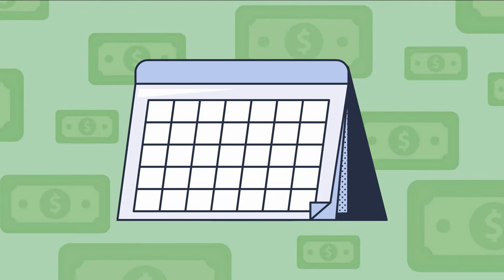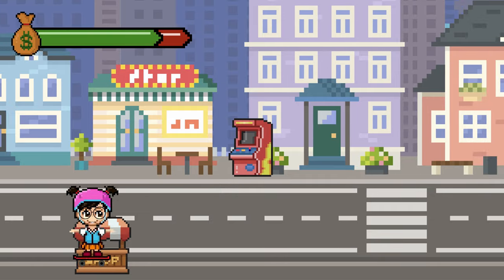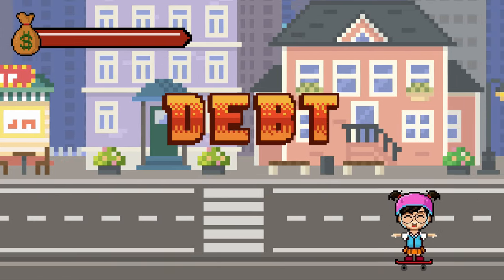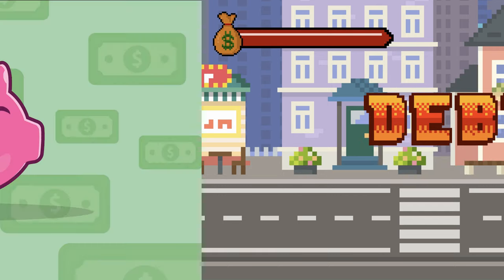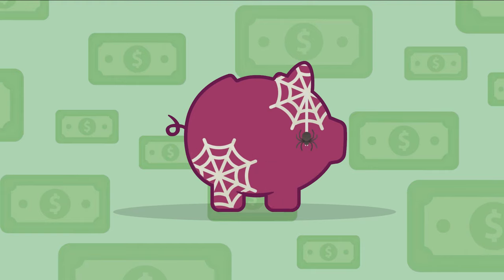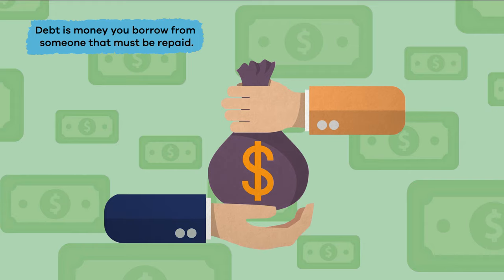Making a budget helps create financial stability because it lets you track how much you spend and how much you can save, which makes paying bills and saving money easier. Another way a budget can be helpful is to make sure you spend within your means, so you don't spend more money than you have. If you spend more money than you have saved, you will go into debt. Debt is money you borrow from someone that must be repaid.